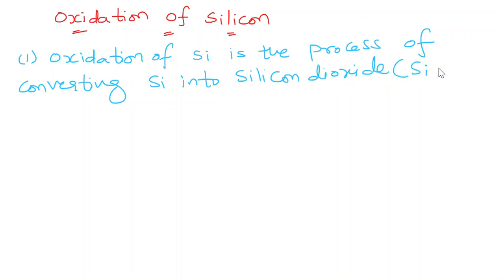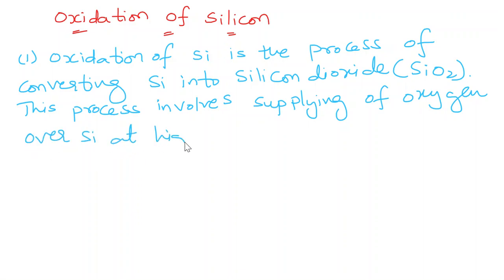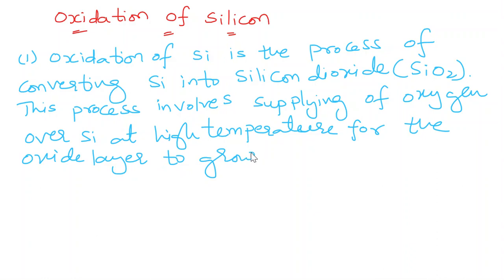That is SiO2. So how does this happen? This process involves supplying of oxygen over silicon at high temperature for the oxide layer to grow on silicon substrate.